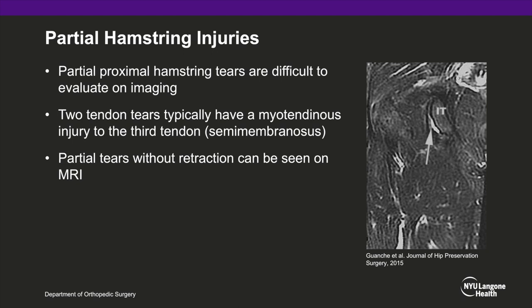Partial hamstring injuries comprise a small portion of proximal hamstring tears and are elusive; in particular, they may be difficult to evaluate on imaging. Most commonly, there is an avulsion of the common semitendinosus and biceps origin with the semimembranosus remaining intact. Partial tears without retraction can be seen on MRI, represented as a sickle sign seen by the white arrow.